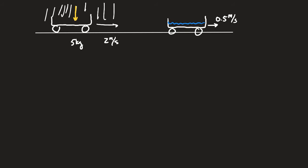The momentum of the system before is just the momentum of the wagon: 5 times 2. This has to equal the momentum of the wagon after, which is 5 times 0.5, plus the mass of the water times its velocity of 0.5. The water gets accelerated to 0.5 meters per second. Momentum still has to be conserved, so we can figure out how much water has to fill the wagon to slow it to half a meter per second.